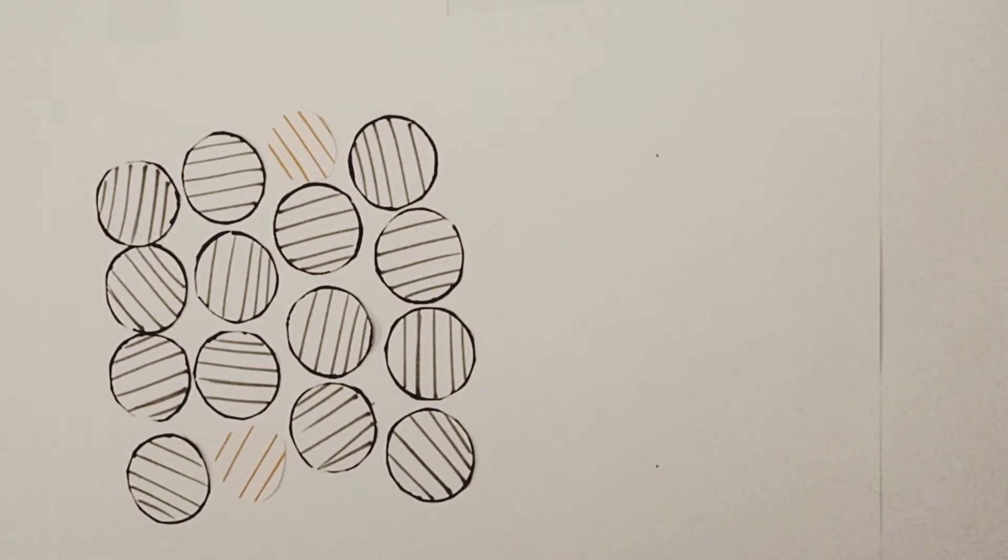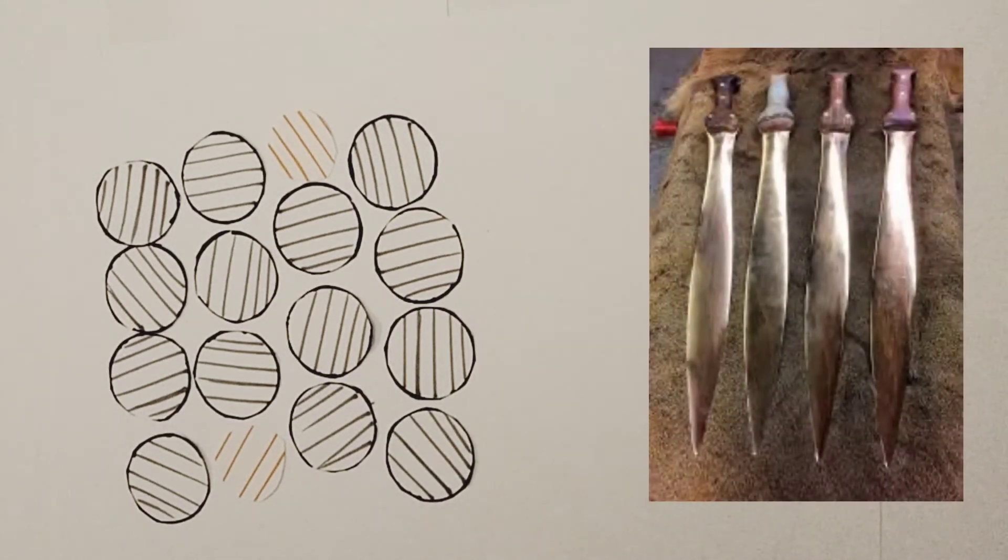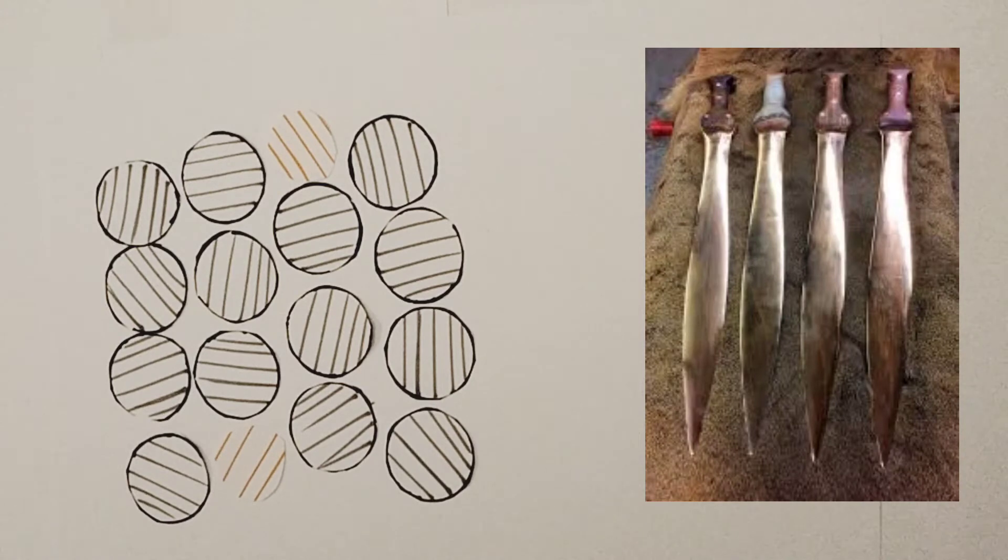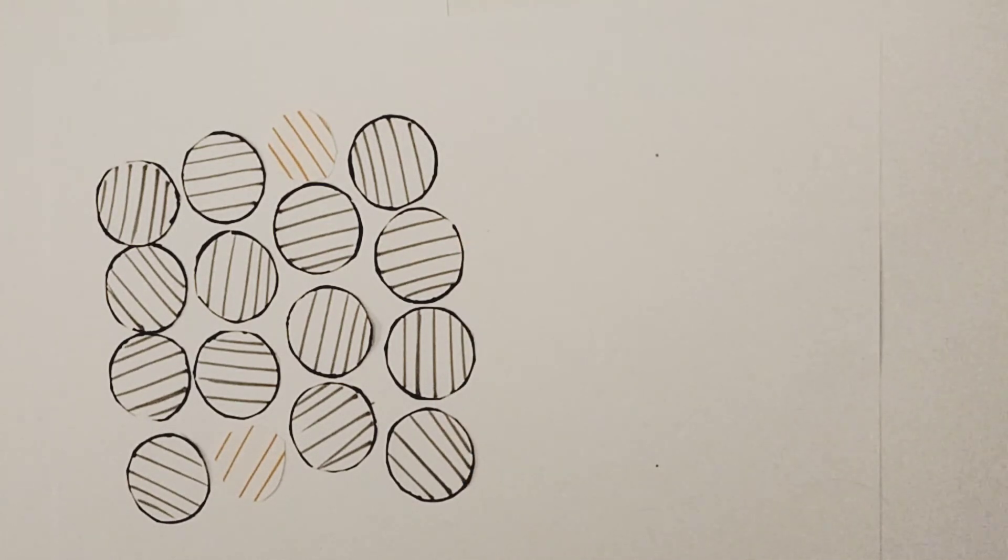Finally, an alloy which is synonymous with an entire age of human civilization: bronze. So bronze is an alloy of tin and copper, both being soft metals.